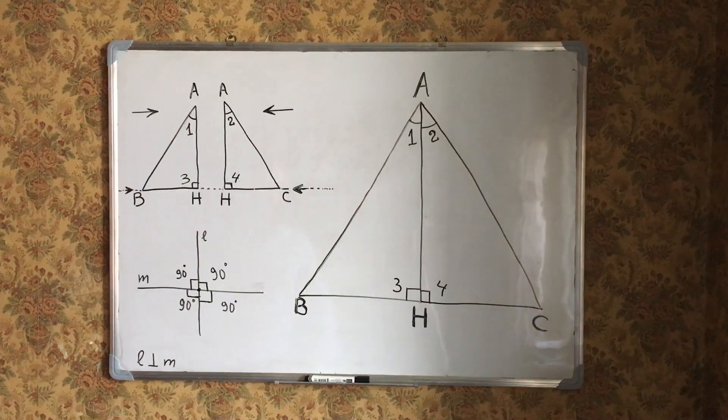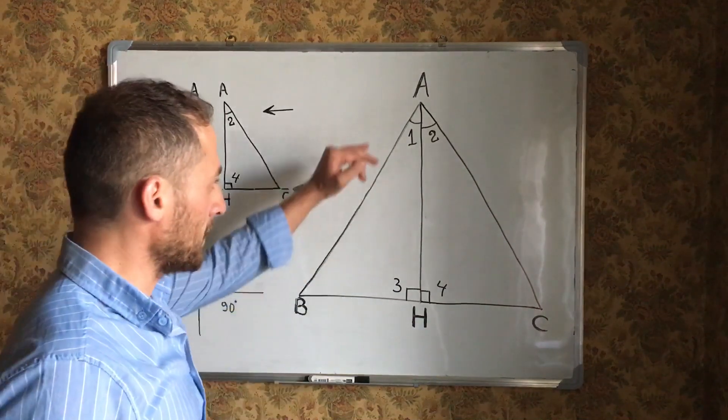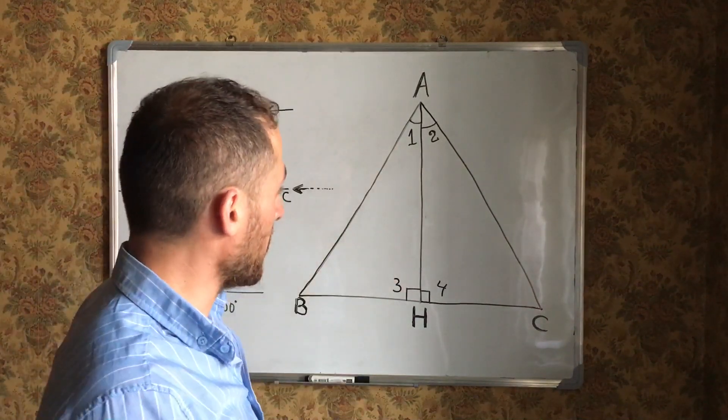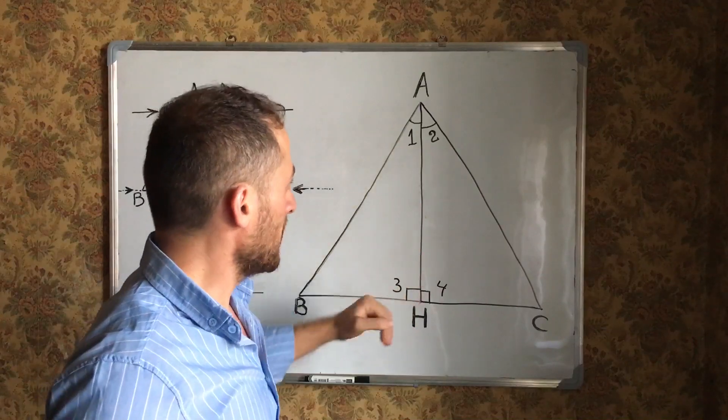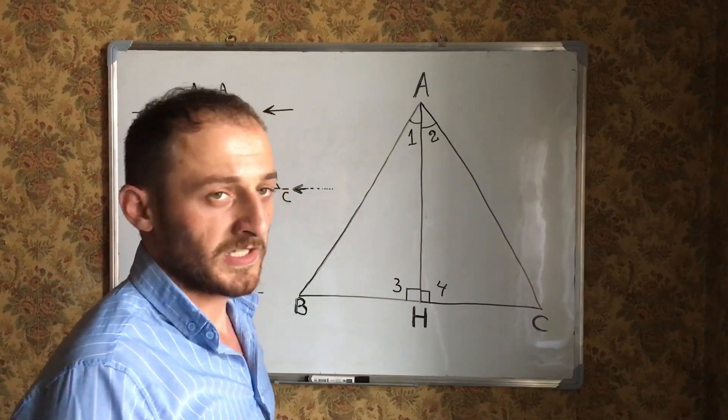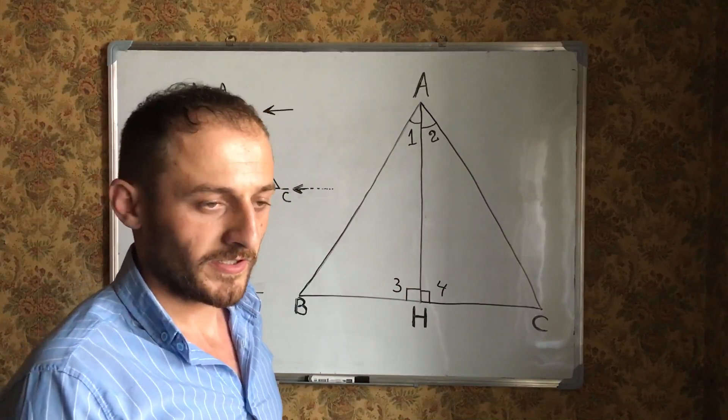Hello guys, today I shall prove that if an angle bisector of a triangle is also an altitude, then the triangle is an isosceles triangle.